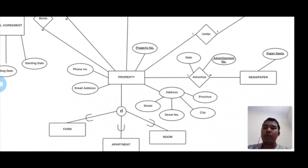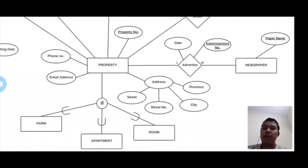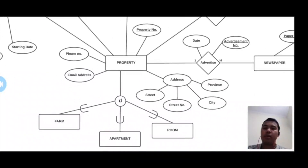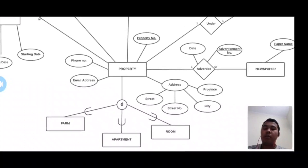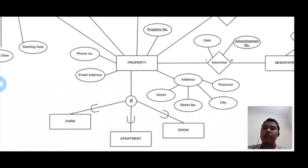The property entity has many attributes such as address, phone number, and email address. Address can include street, street number, city, and province. Property entity has subsets such as firm, apartment, and room.